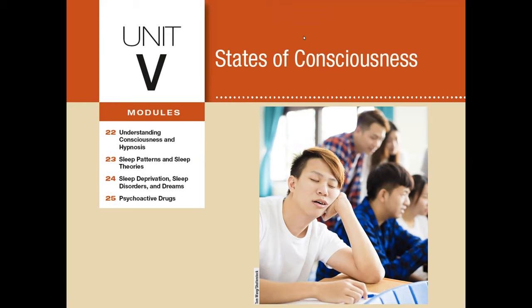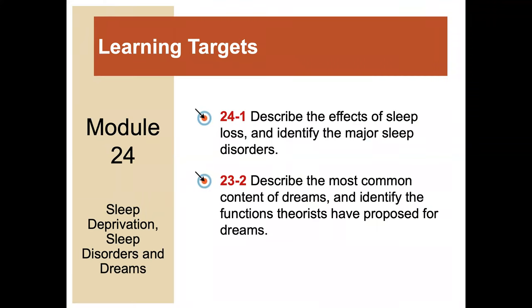Welcome back to module 24, we are in unit 5: States of Consciousness. This module is about sleep deprivation, sleep disorders, and dreams — all topics that can be very relevant to our lives. These recordings follow along with Myers Psychology for the AP Course, third edition. There are only two learning targets for this module: first, describe the effects of sleep loss and identify the major sleep disorders; second, describe the most common content of dreams and identify the functions theorists have proposed for dreams.